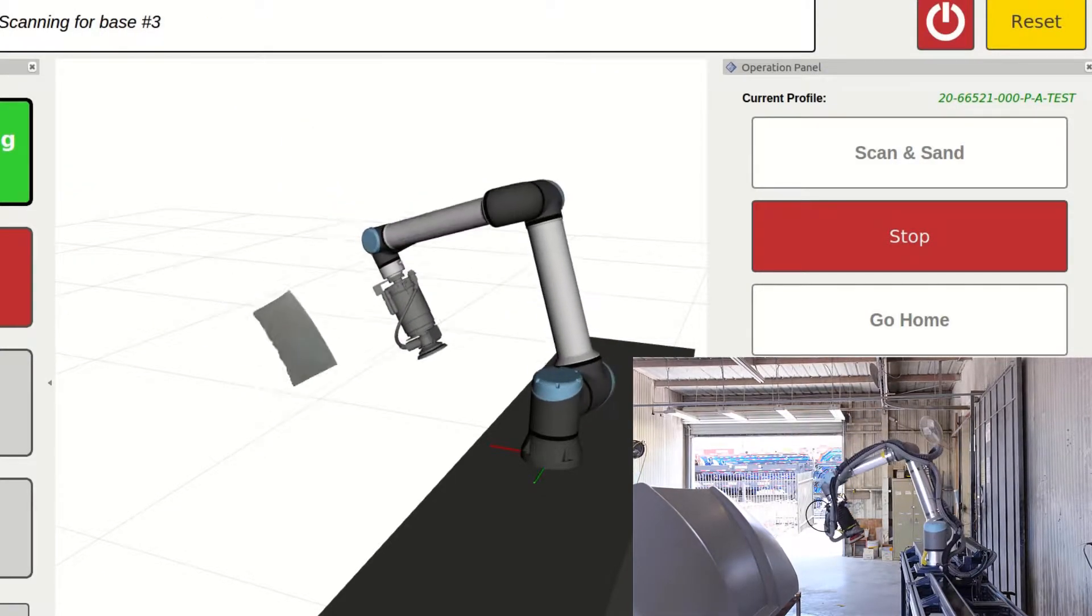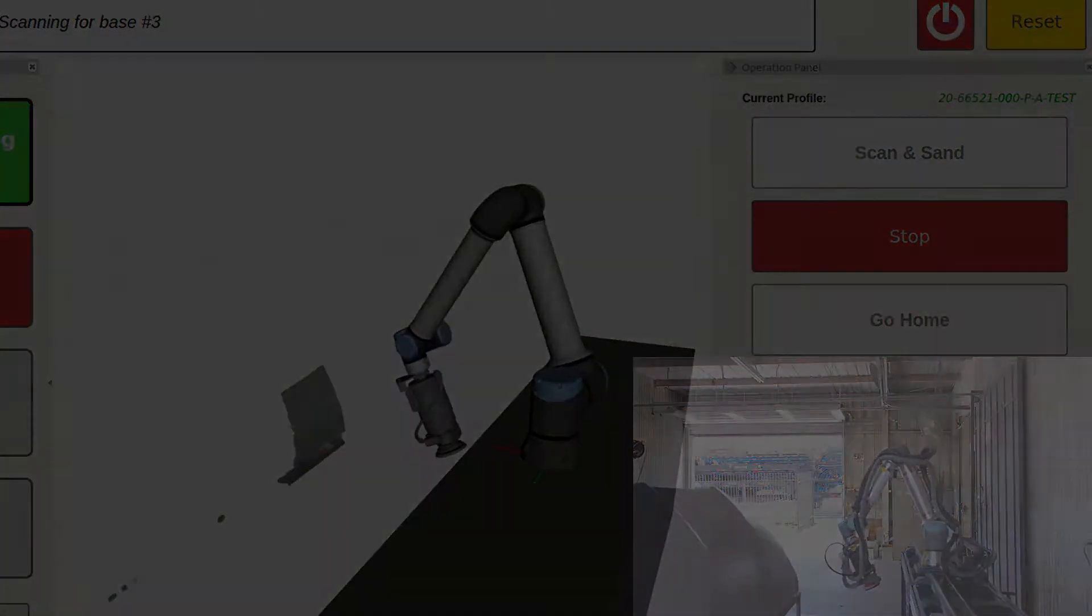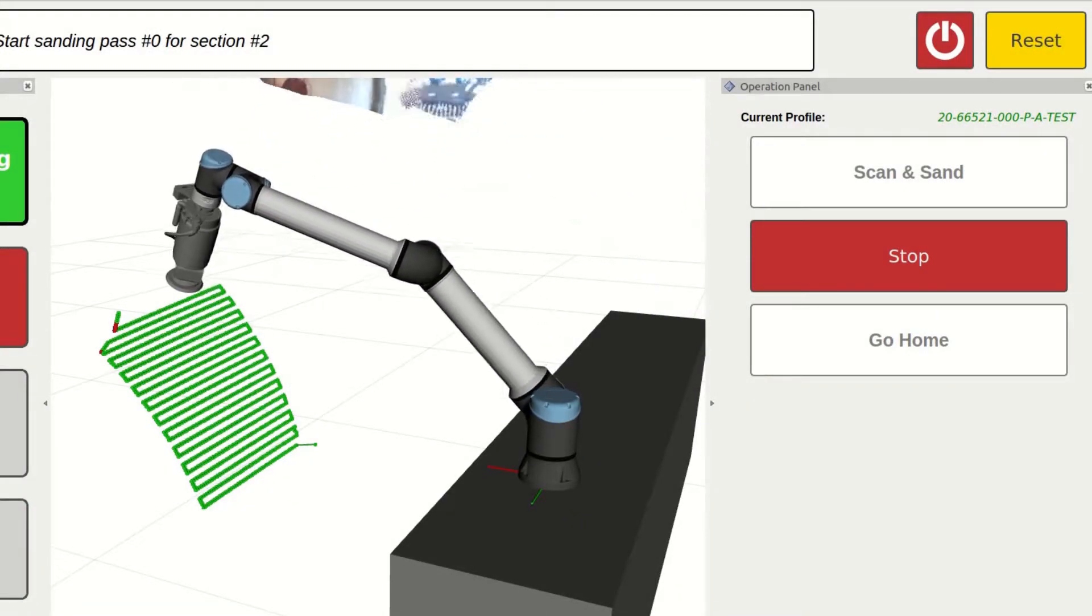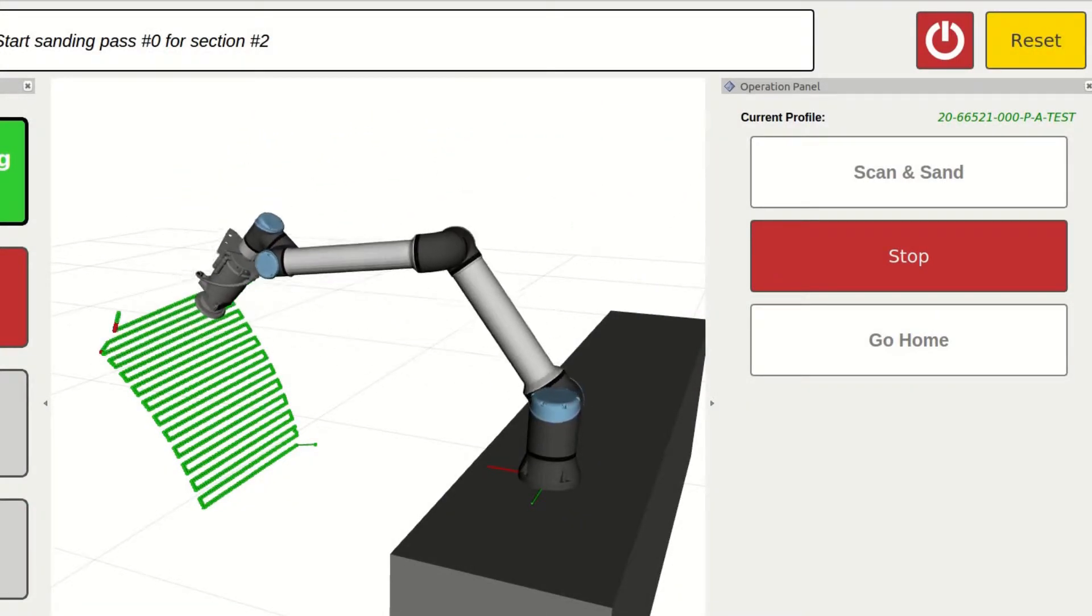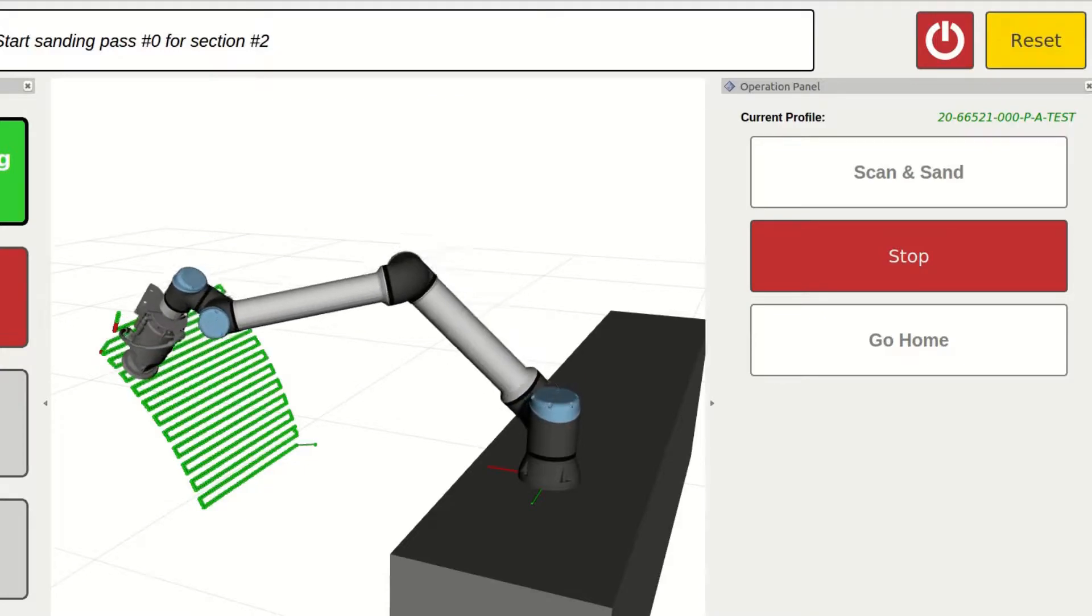The shop floor operator starts the operation by pressing a couple of buttons on the screen. The system automatically scans the part which is placed in the robotic cell.